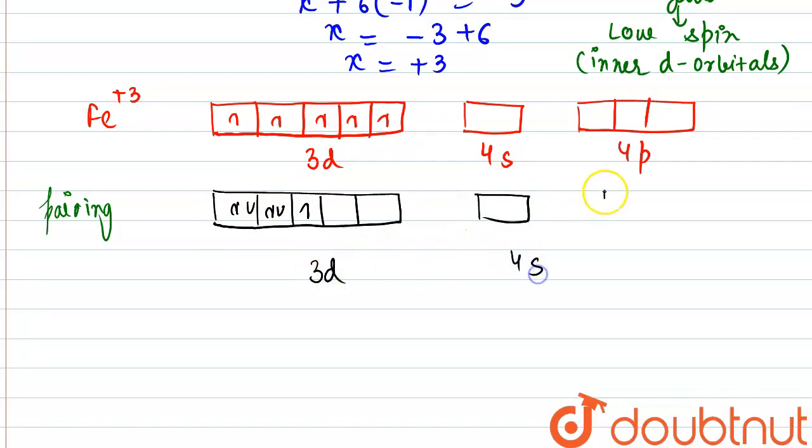This is 3d now, this is 4s and this is 4p. So we can see we have got the inner d orbitals vacant. One cyanide ligand will be attaching here, another cyanide will do the bonding here.